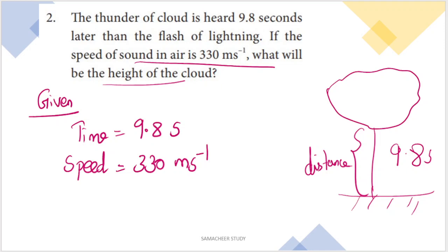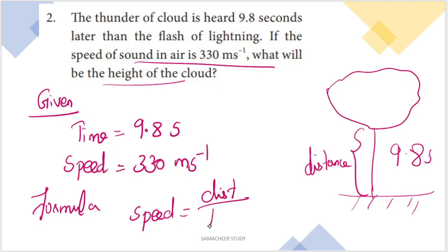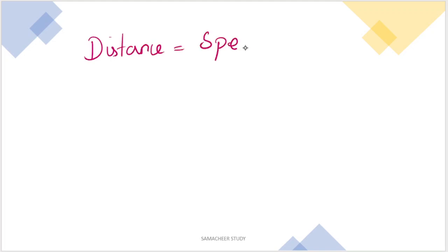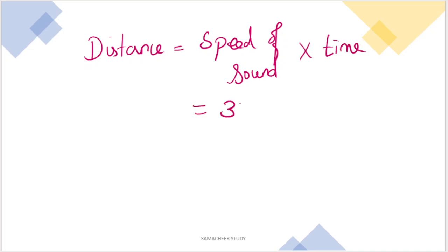Height of the cloud equals distance traveled by the sound. Using the formula: distance = speed × time. Substituting: distance = 330 multiplied by 9.8.